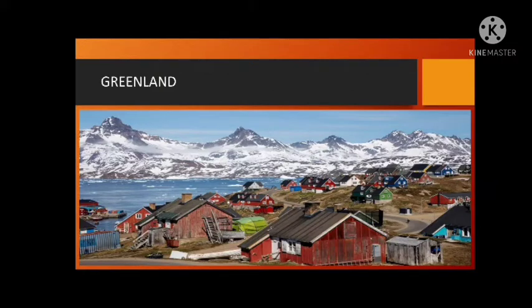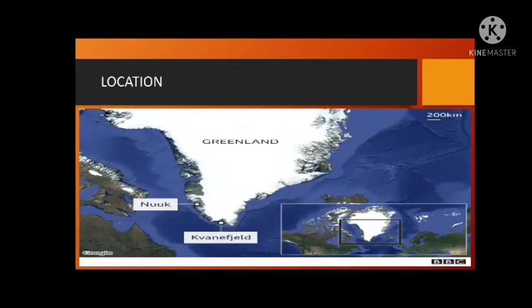Greenland is a country in the northern frozen zone near the North Pole. It is the world's largest island. Greenland is only 650 kilometers away from the North Pole. It is an autonomous territory of Denmark, meaning it is a self-governing state.